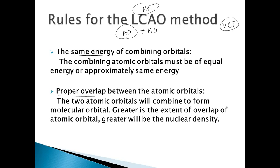The first rule is that combining orbitals should have the same or almost equal energy — whether it's S+S, P+P, D+D, or S+P. If S is combining with P in a molecule, the S orbital of one atom should be almost equal in energy to the P orbital of the other atom.